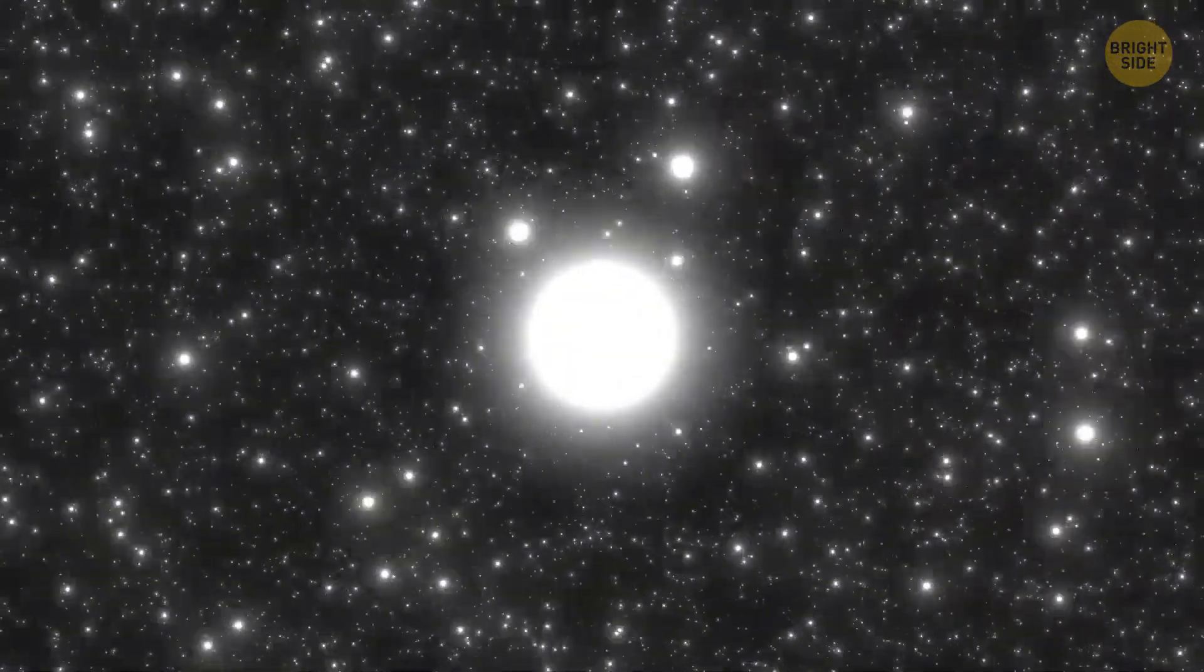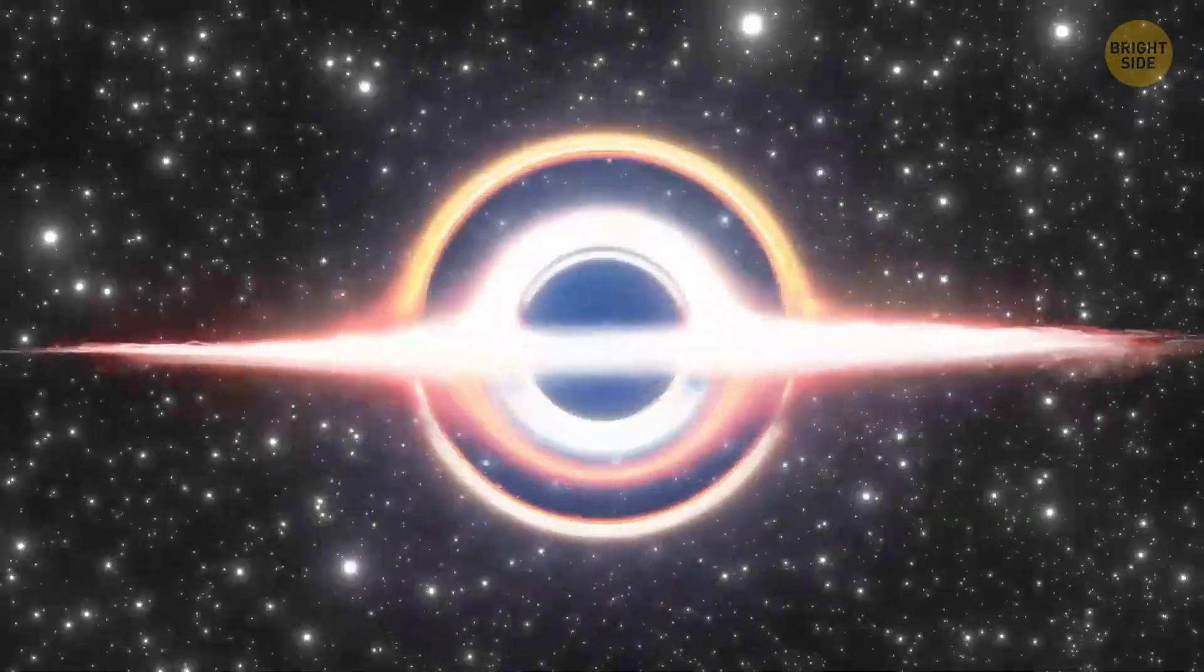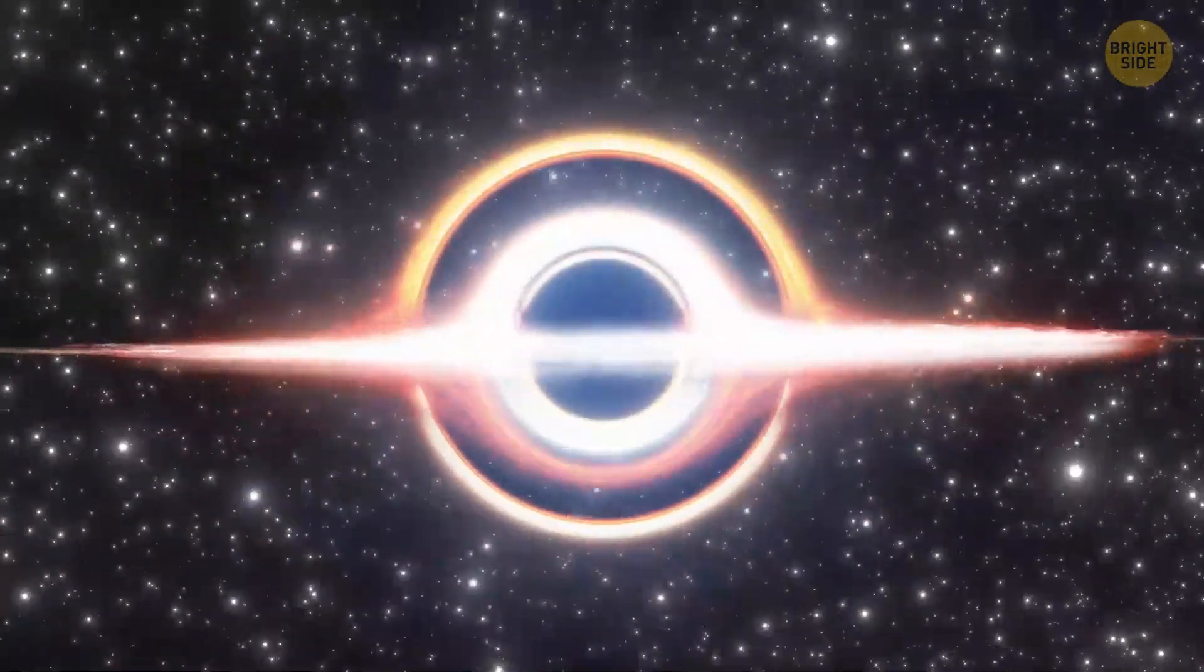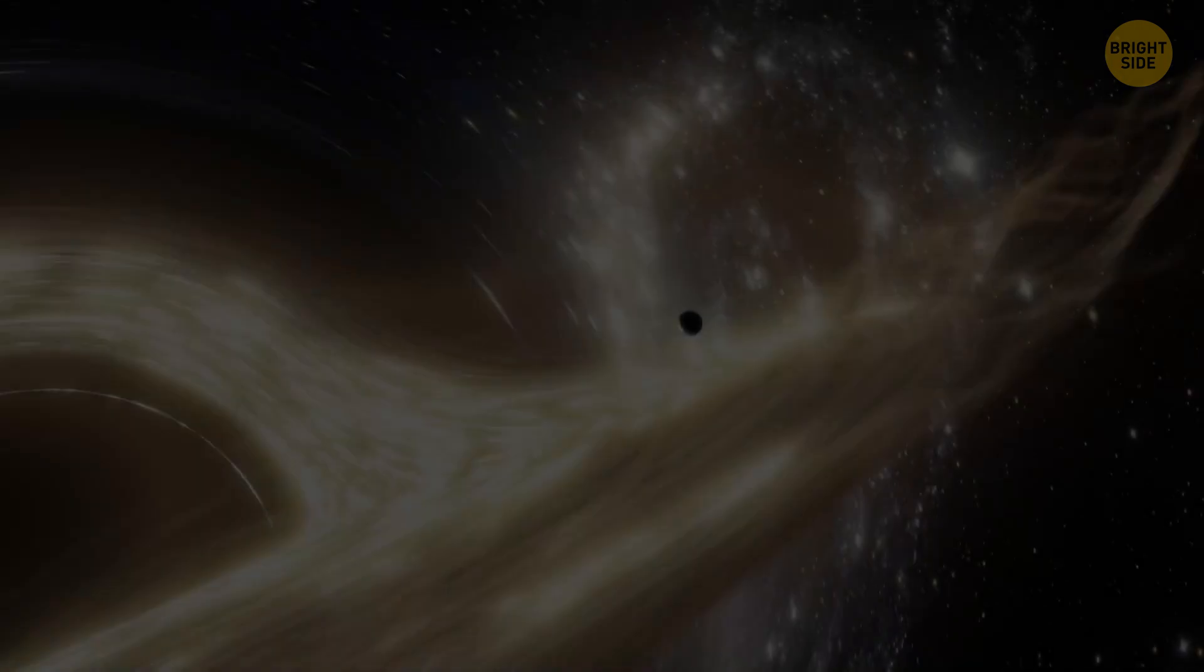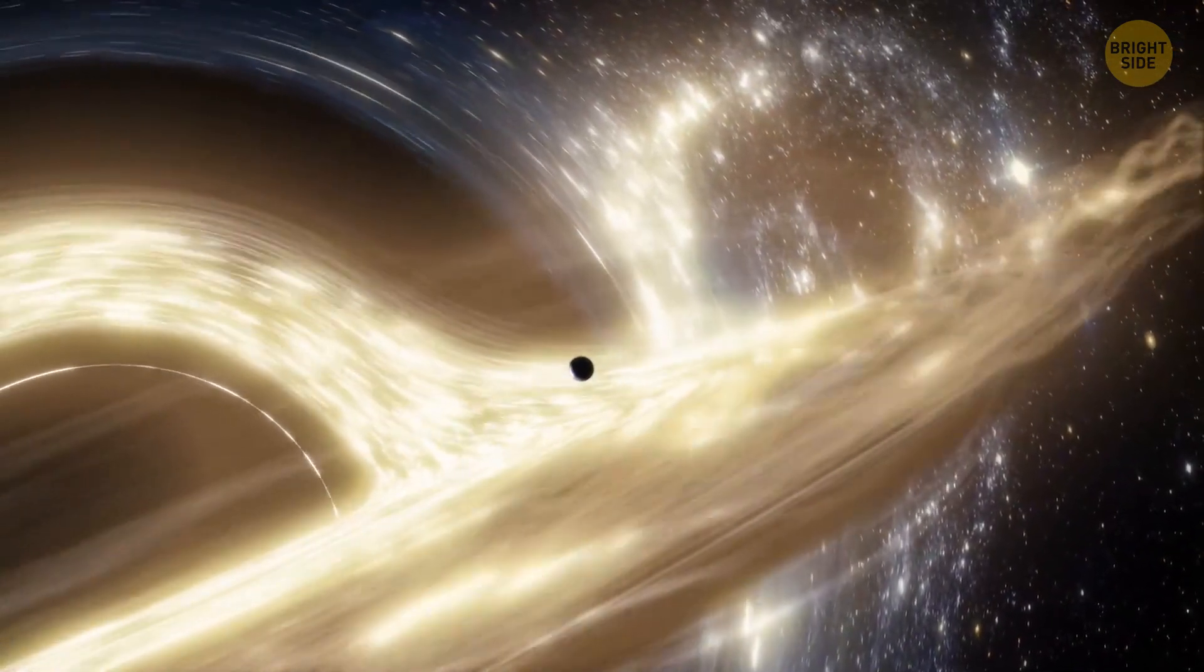The stars live their comfy lives, and once they get to the finishing line, they collapse under their own huge weight. Then, the black hole forms. Black holes love to eat everything around them, and the more they eat, the bigger they get.